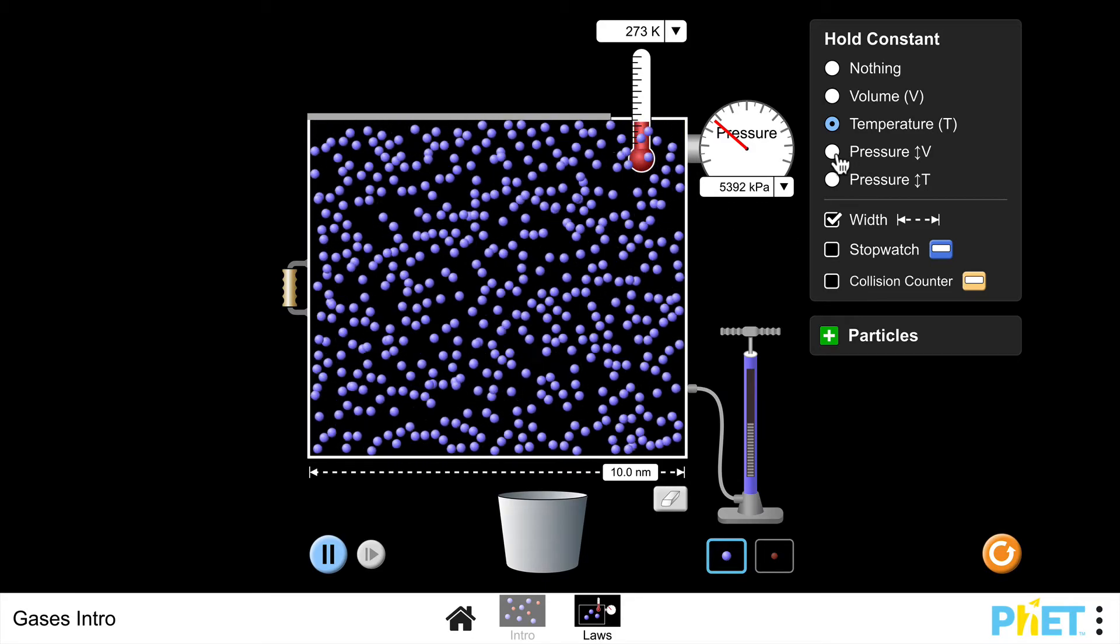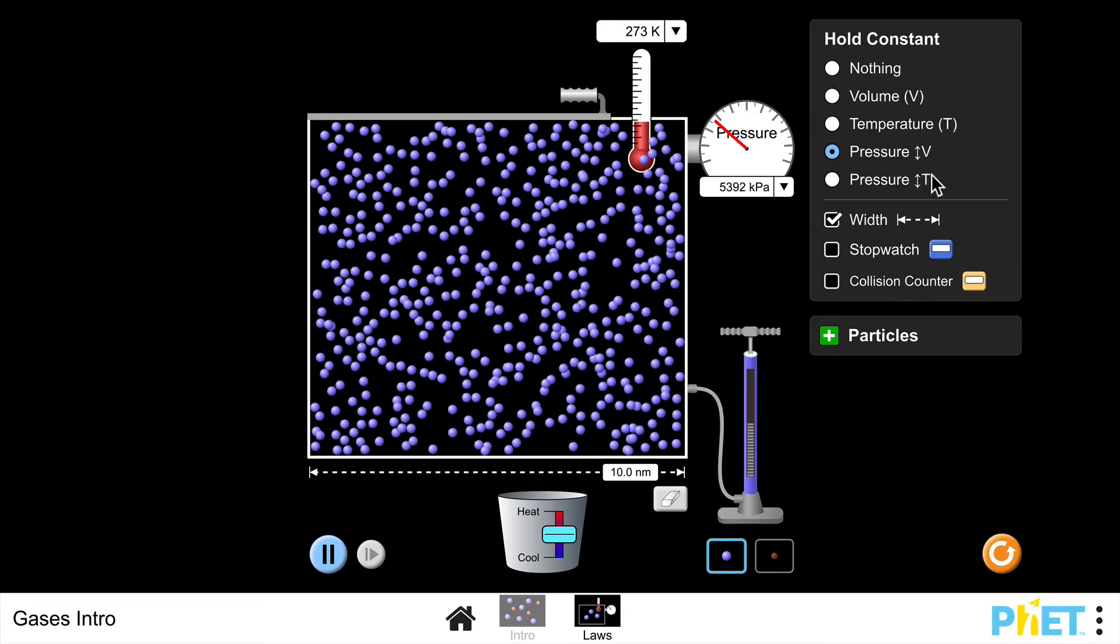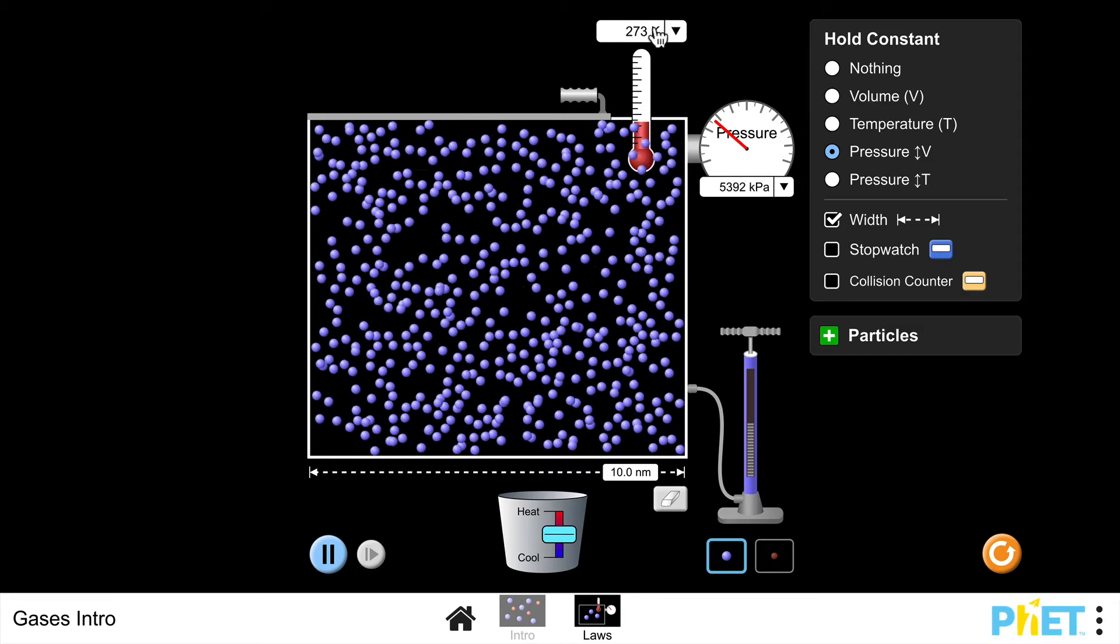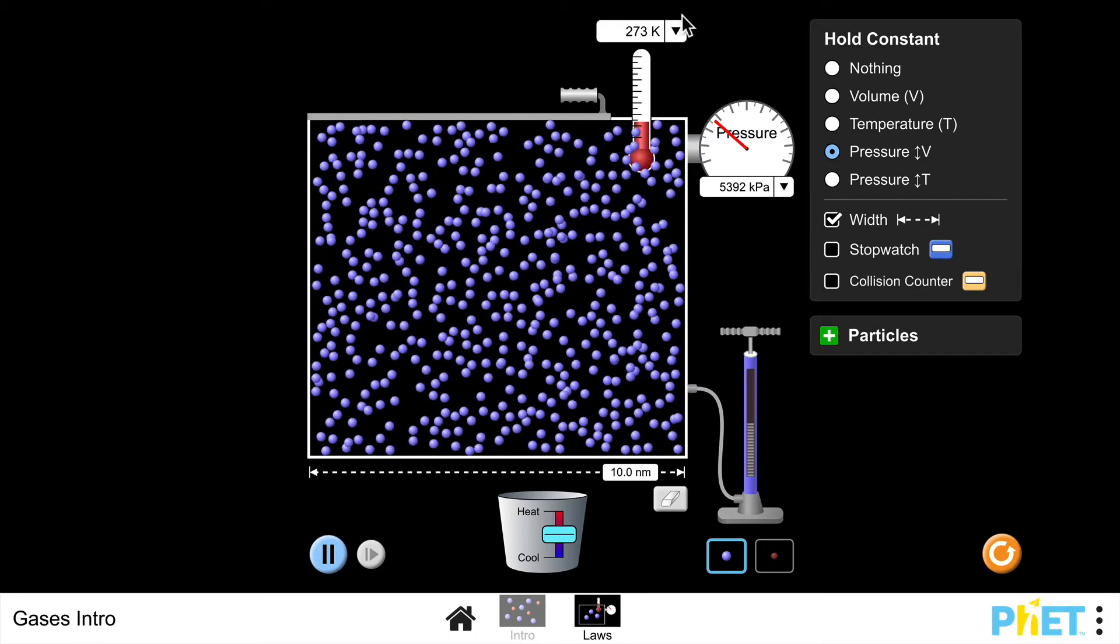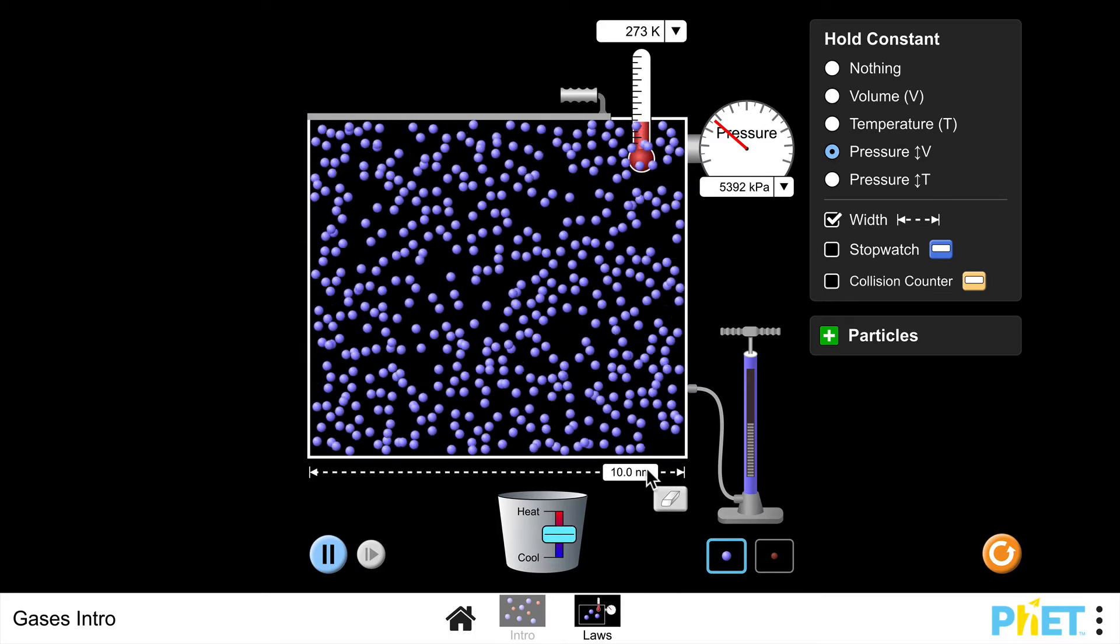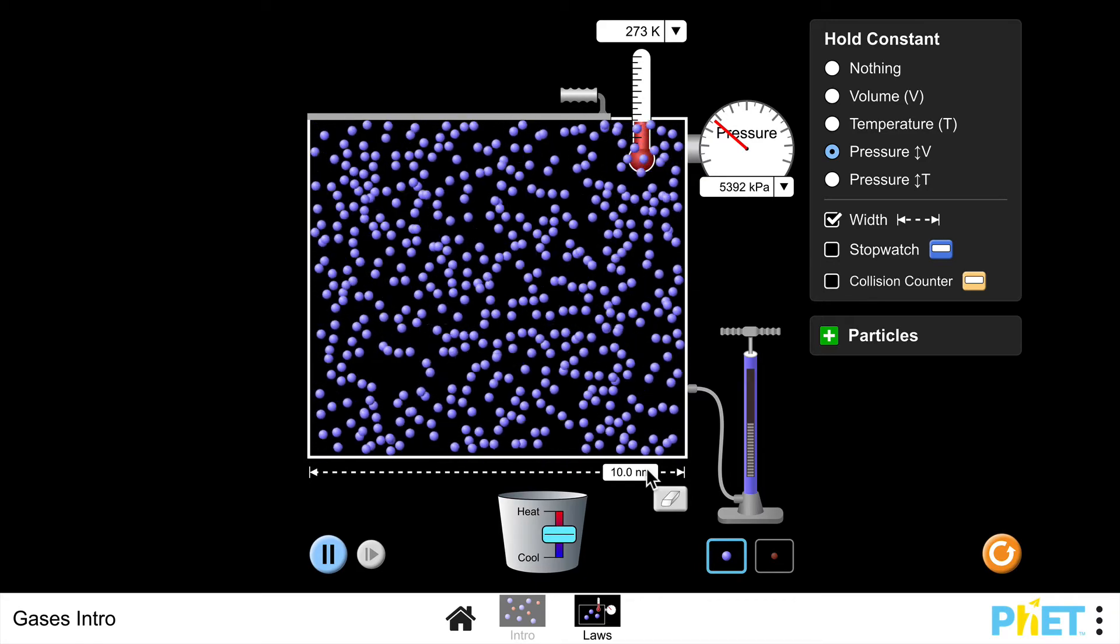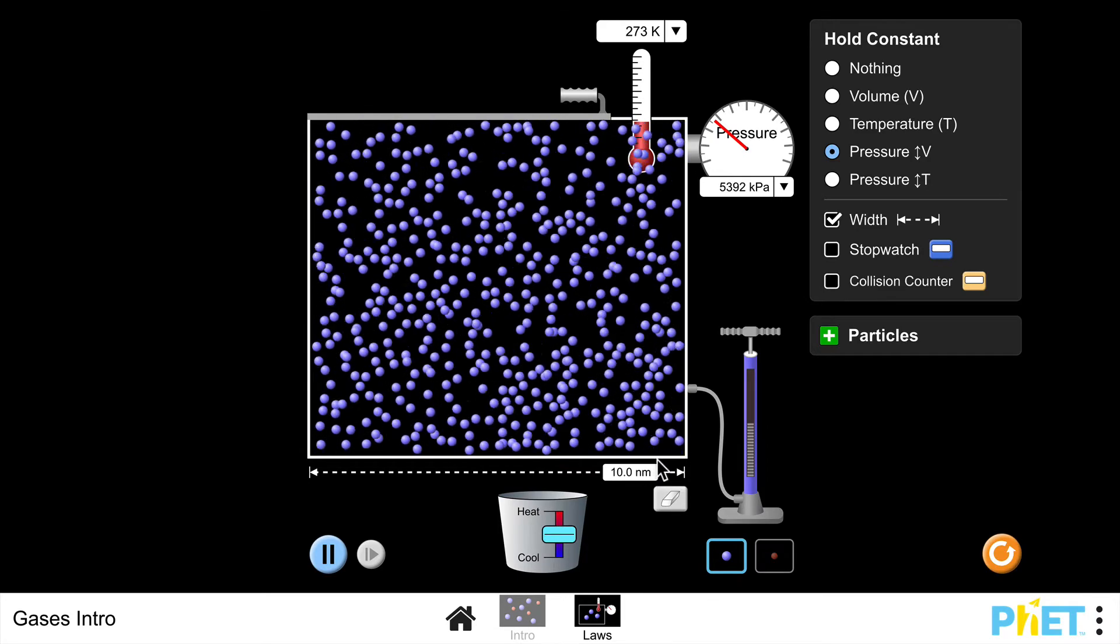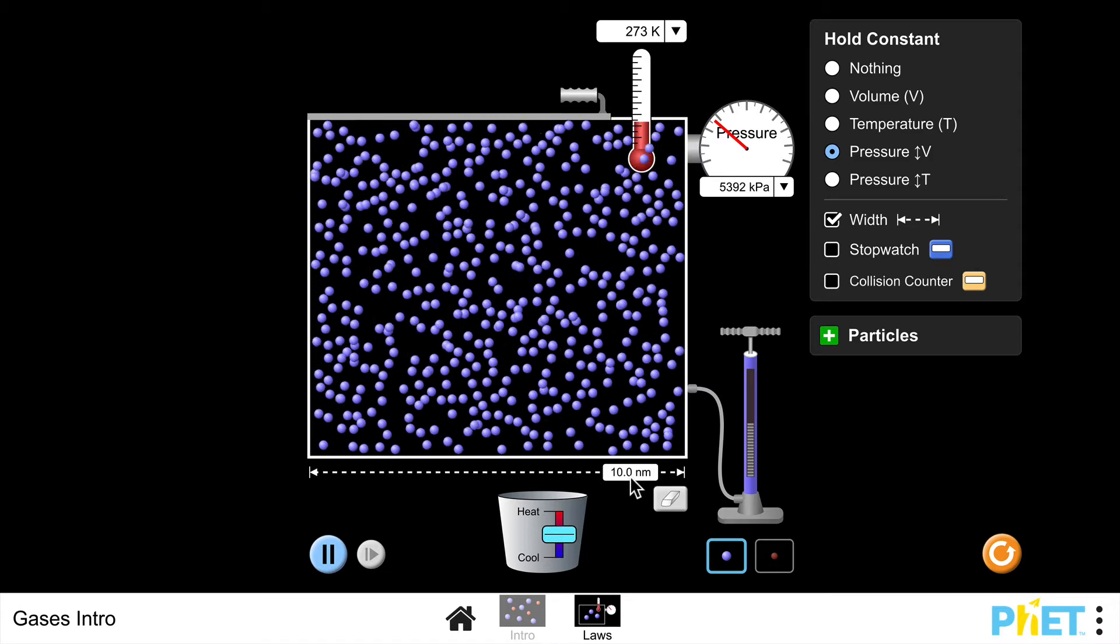Now, last but not least, I'm going to click here to keep the pressure the same but allow volume to go up and down. And at the moment, I'm at 273 Kelvin, and what I want to be basically taking measurements of are the temperature in Kelvin and this width. And again, of course, I'm going to be taking that width as a measure of the volume. So again, if it was to double, then the volume would double. So I would take this as my first two readings, 273 Kelvin and 10 nanometers.